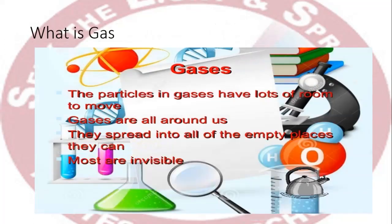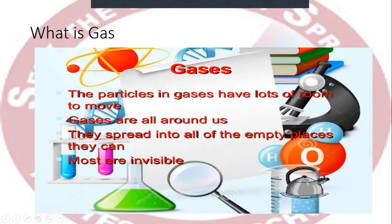What is gas? The particles in gases have lots of room to move. Gases are all around us — they spread into all the empty places they can. Most gases are invisible. Gas does not have a definite shape or volume. Like liquids, gases take the shape of their container, but unlike liquids, gases will spread out and completely fill the container they are in. If gas is not in a container, it will keep spreading, because the atoms of a gas are farther apart than those of a solid or liquid, so they can move freely.